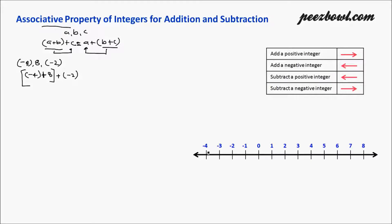Let us use a number line to add these integers. First, we work on the bracket. We find minus four on the number line. As we are adding a positive integer, we need to move right by eight units. After moving eight units to the right, we reach at four — so minus four plus eight equals four.